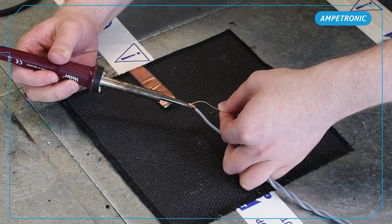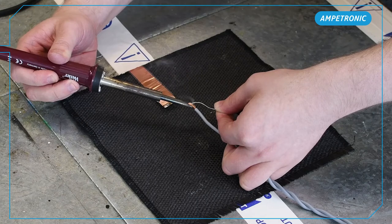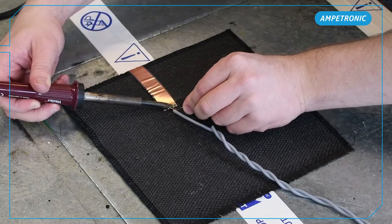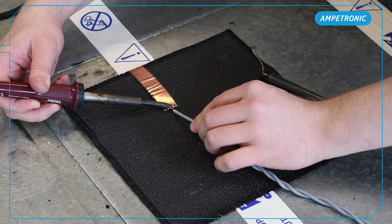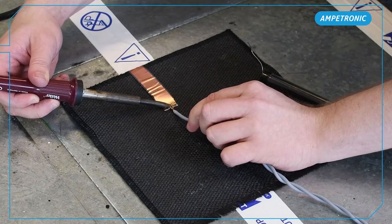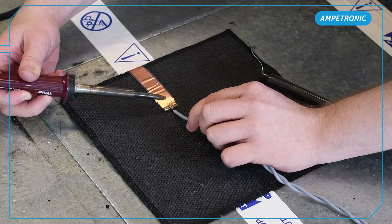You start by either tinning the flat copper tape or the feed cable. In this case, I started by tinning the flat copper tape first and then the feed cable. When joining the cables, make sure you have a decent amount of overlap between the two cables and then apply heat.